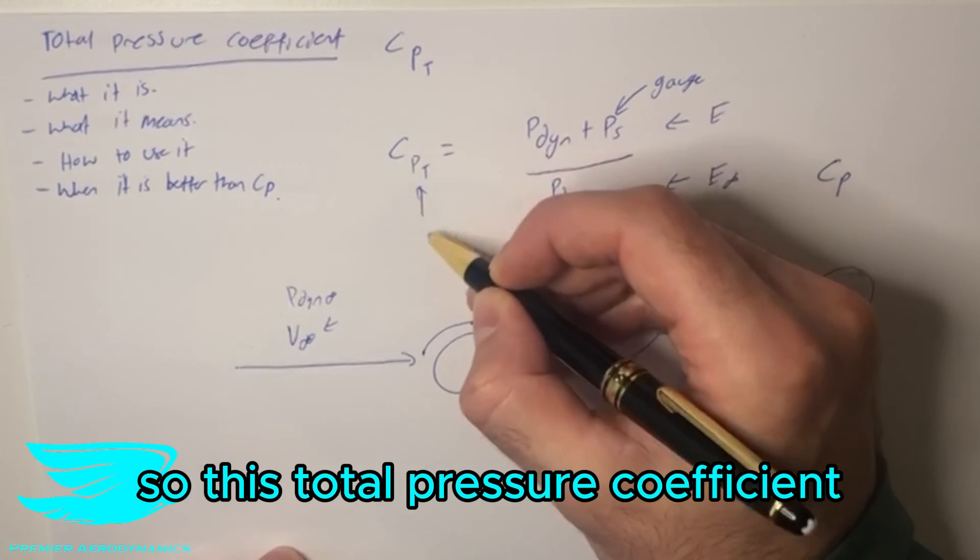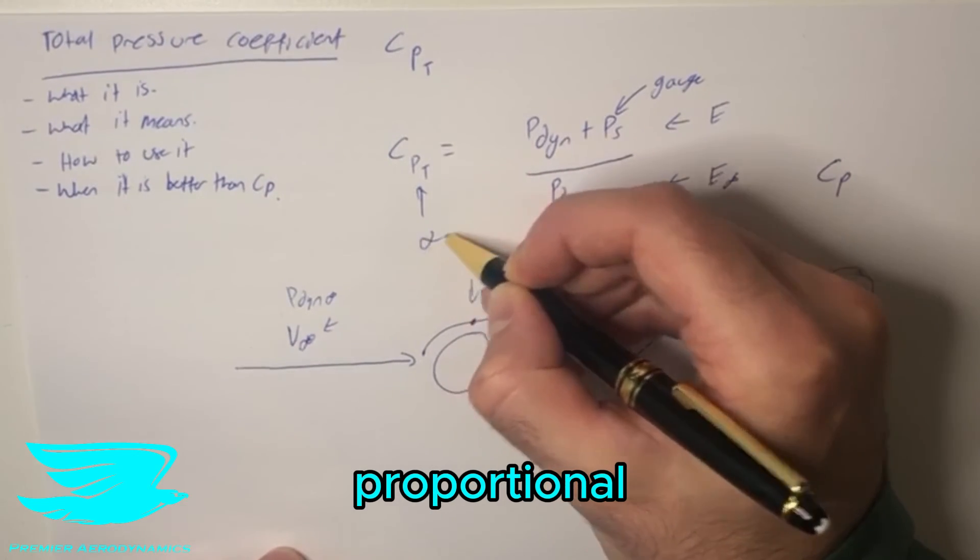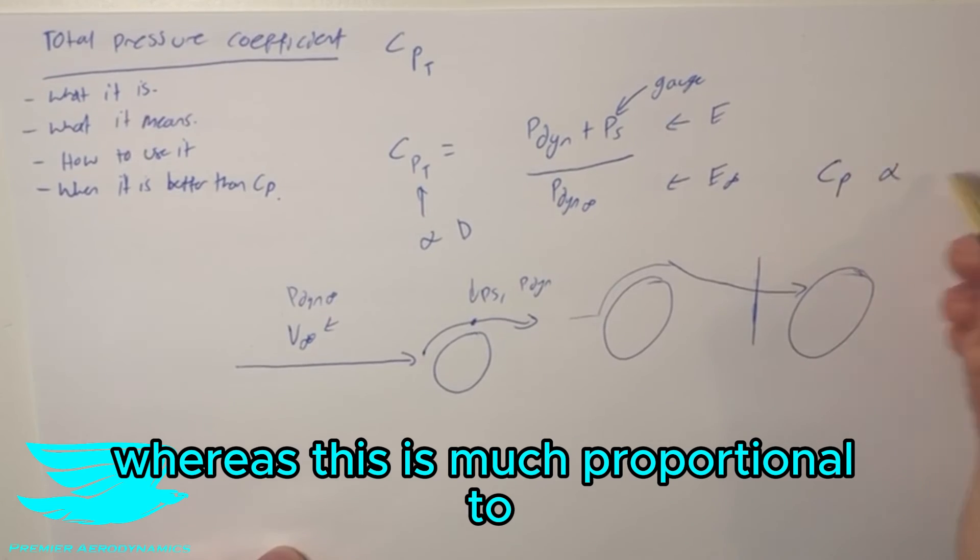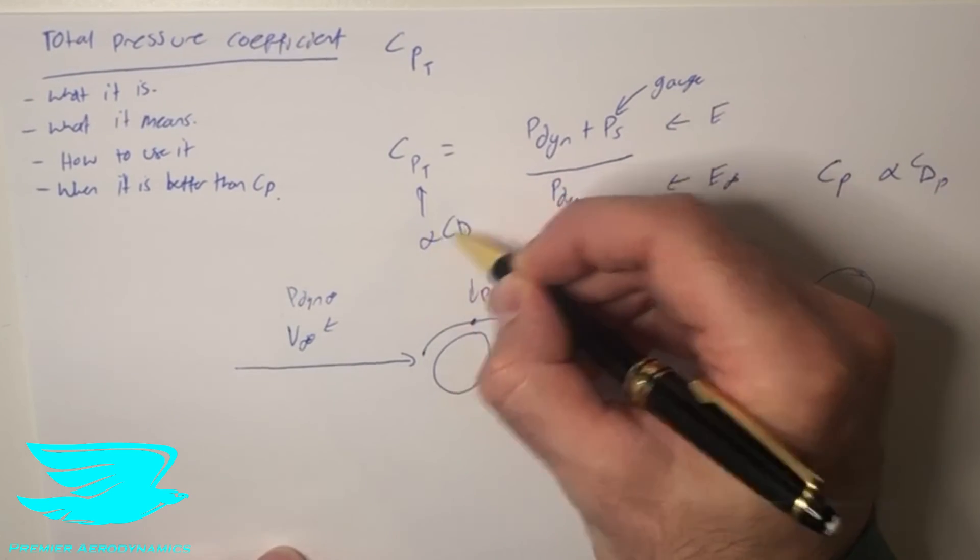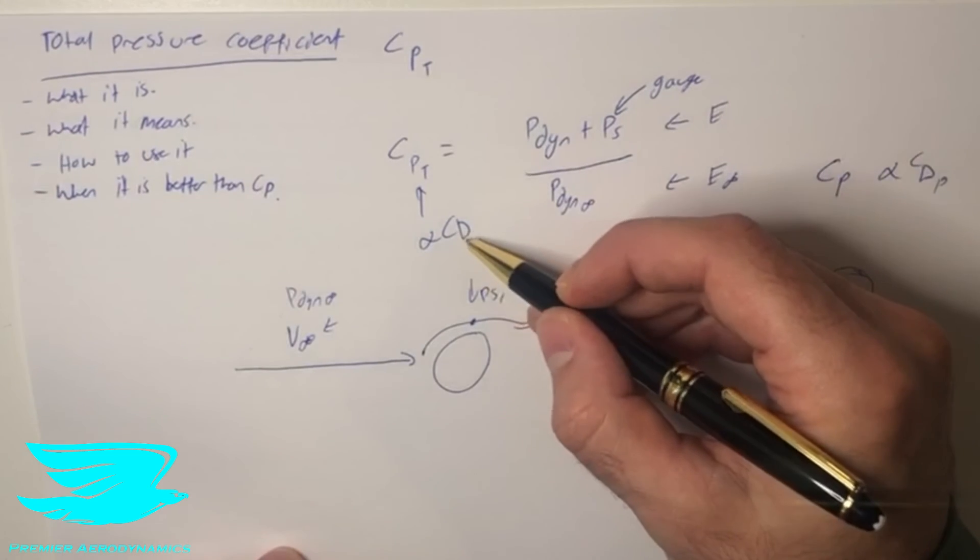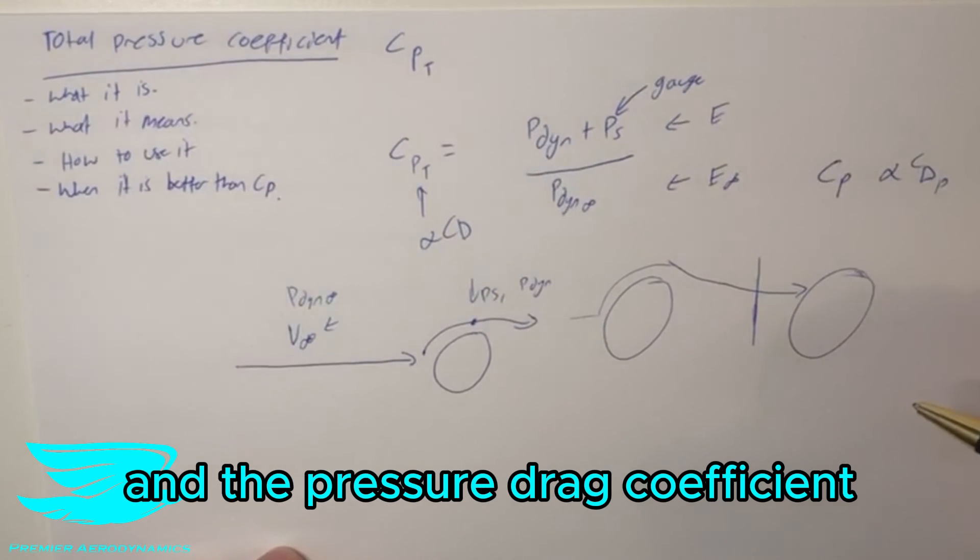So this total pressure coefficient is much more proportional to the drag, whereas this is much more proportional to the pressure drag.